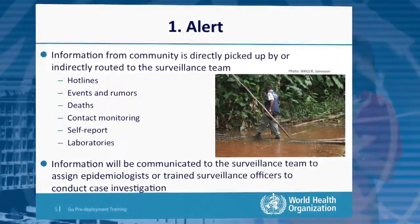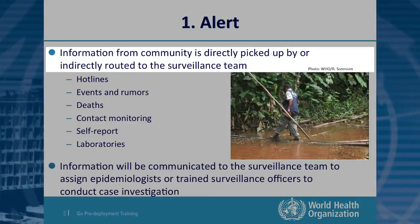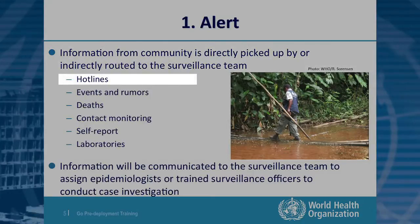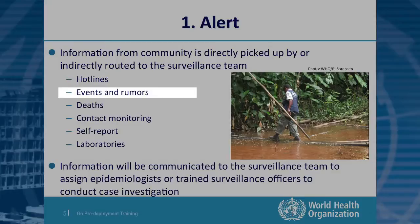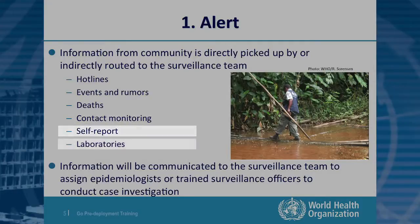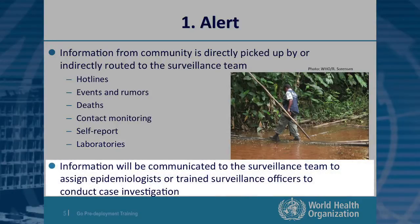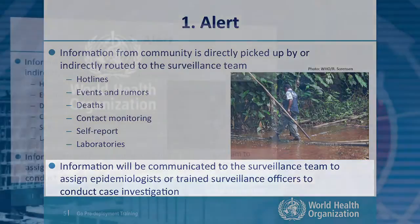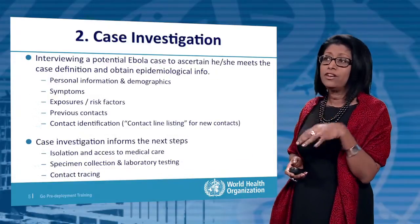Step one: alert. Information from the community is directly picked up by or indirectly routed to the surveillance teams. This happens via hotlines — in Ebola-affected countries people call in — as well as events and rumours, deaths (which are a big signal that Ebola is in the community), contact monitoring of previous cases, self-reporting, and laboratory diagnosis. Information is then communicated to the surveillance team to assign epidemiologists and trained surveillance officers to conduct case investigation.